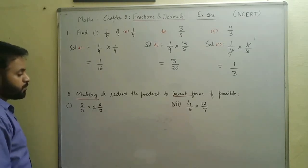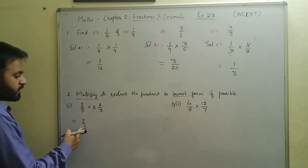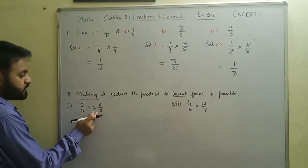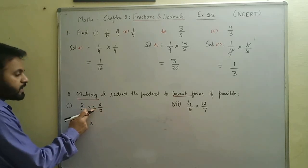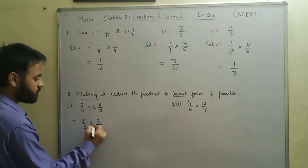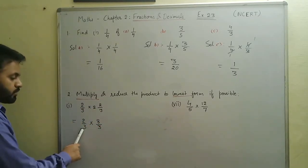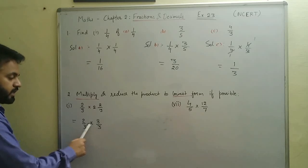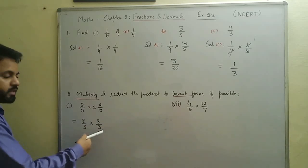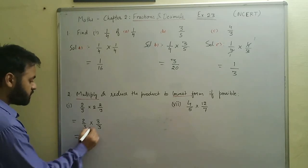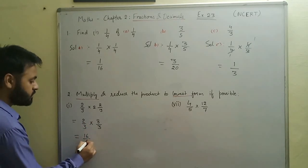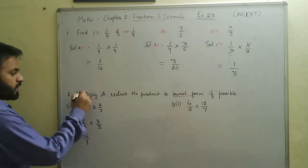To multiply the fractions in part one, we first change the mixed fraction into an improper fraction. Two by three remains as it is. For the mixed fraction, three twos are six, and six plus two is eight, giving us eight by three. We cannot cancel two and three, or eight and three, so we multiply the numerators and denominators: two times eight is sixteen and three times three is nine, giving sixteen by nine.